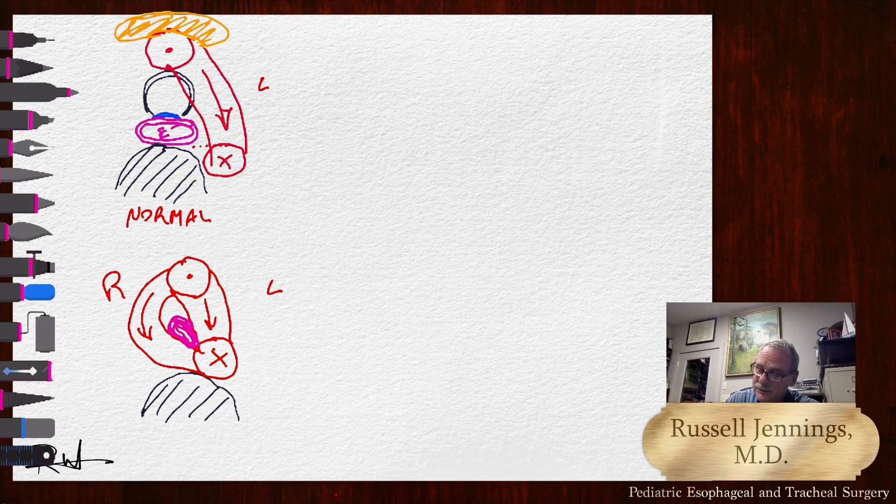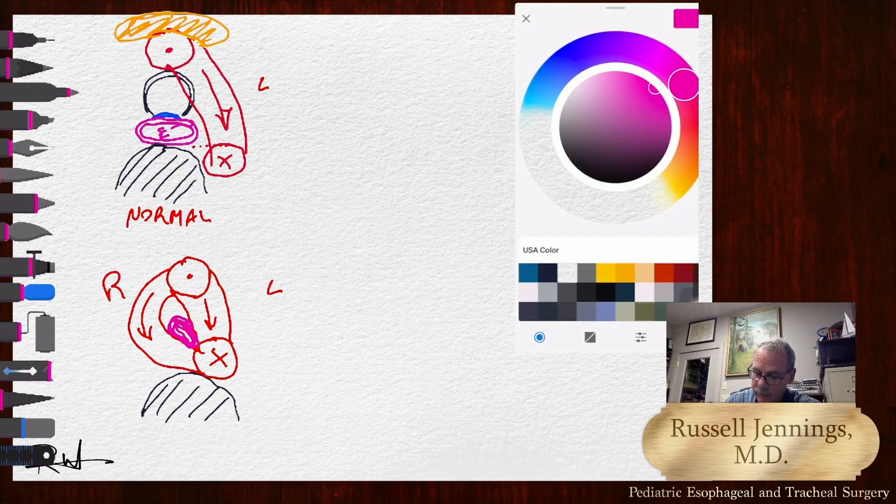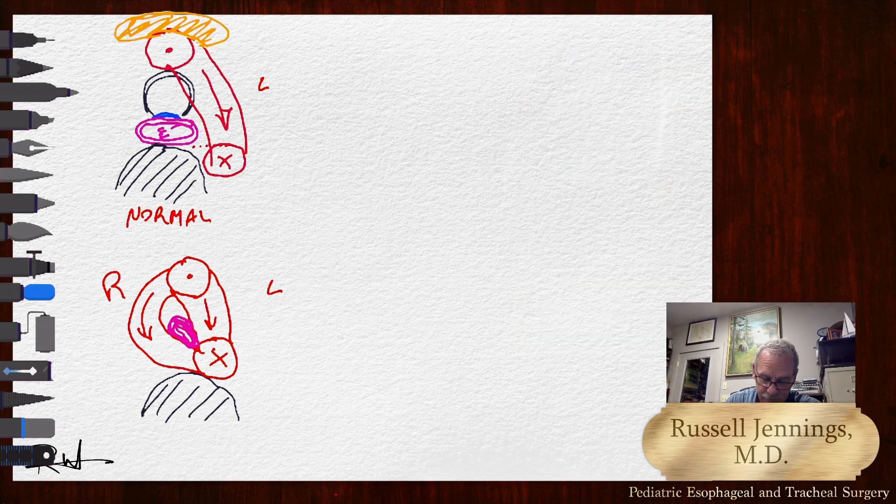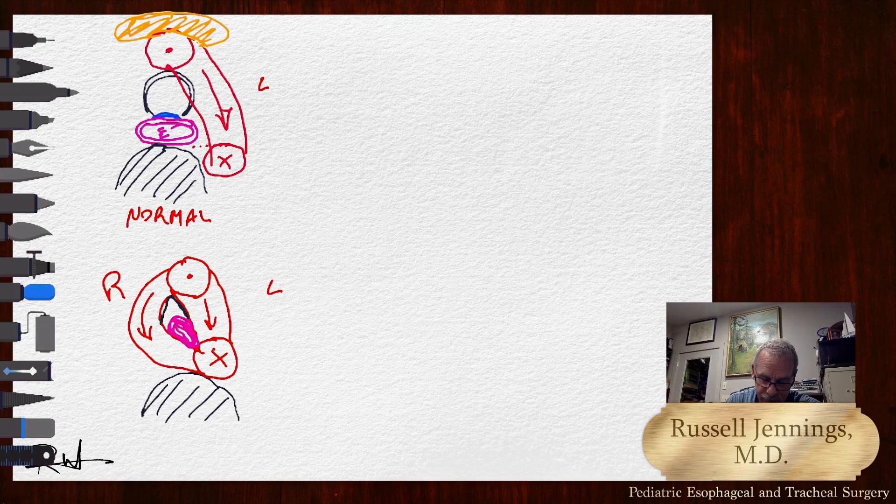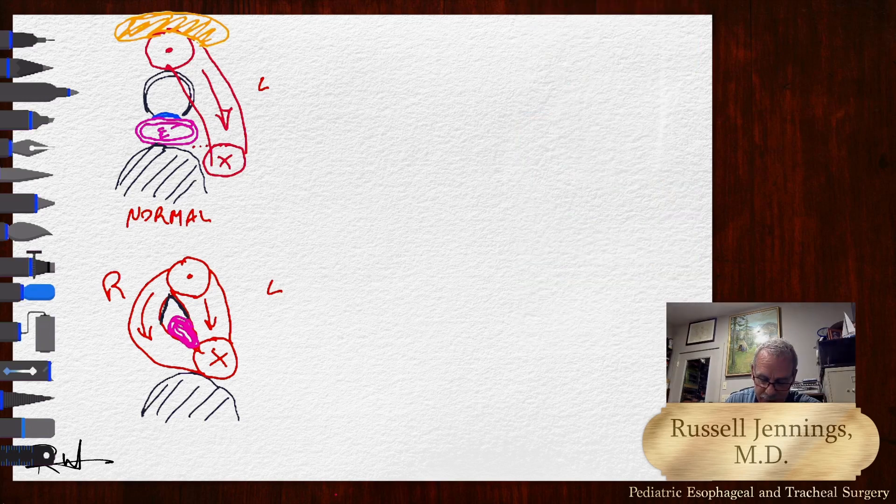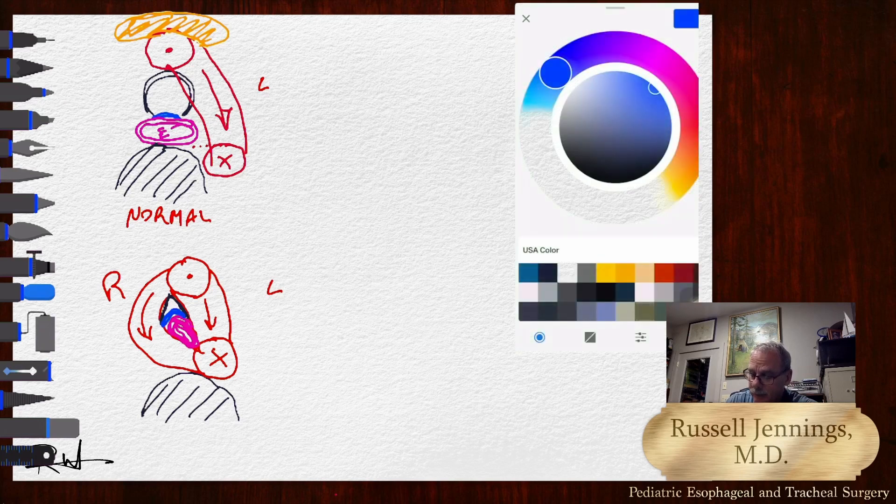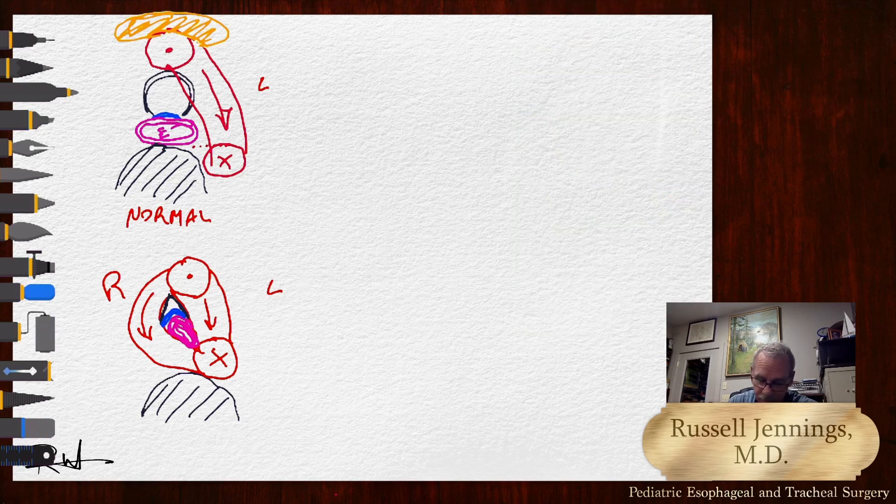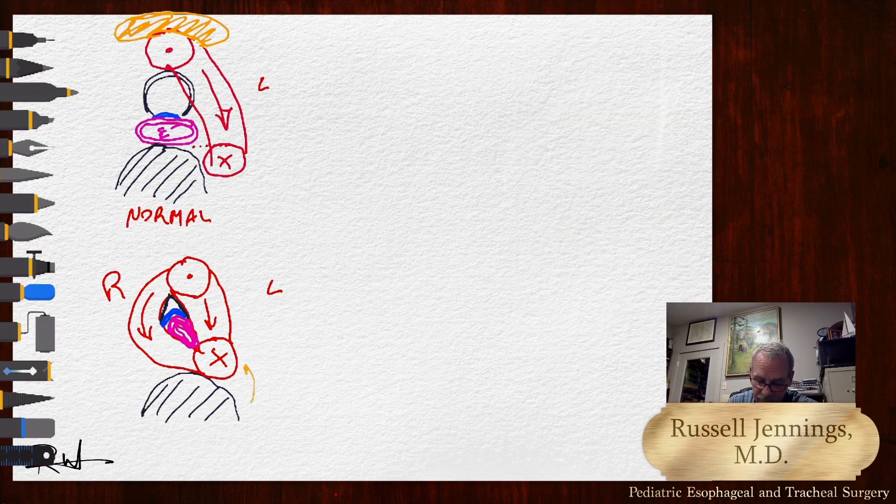But some of you have already noticed there's a major problem with the airway. And the airway is typically C-shaped, and the posterior membrane is significantly pushed up into the airway. So we have a number of problems with this situation.